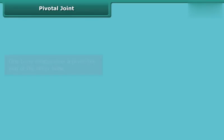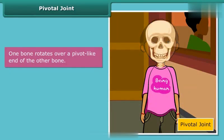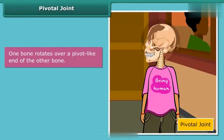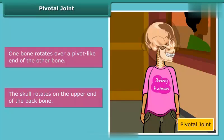In a pivotal joint, one bone rotates over a pivot-like end of the other bone — it's like the skull rotates on the upper end of the backbone.